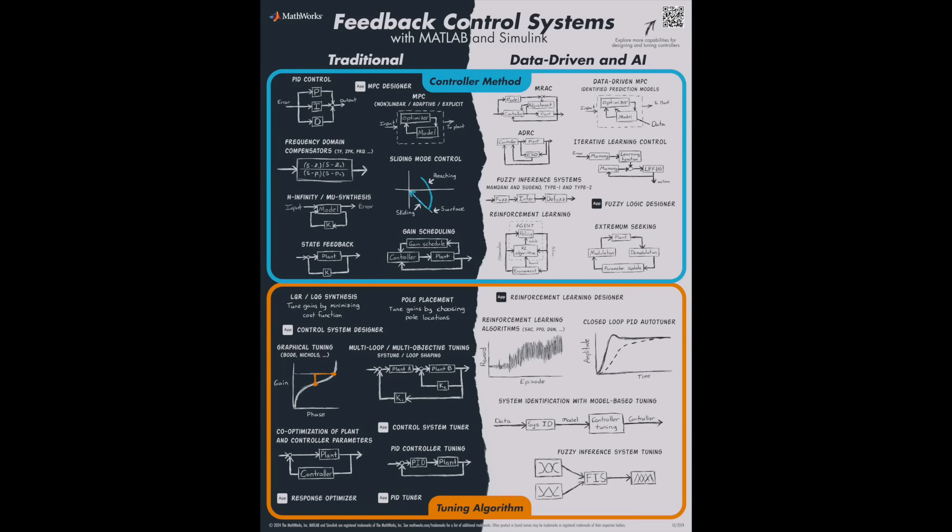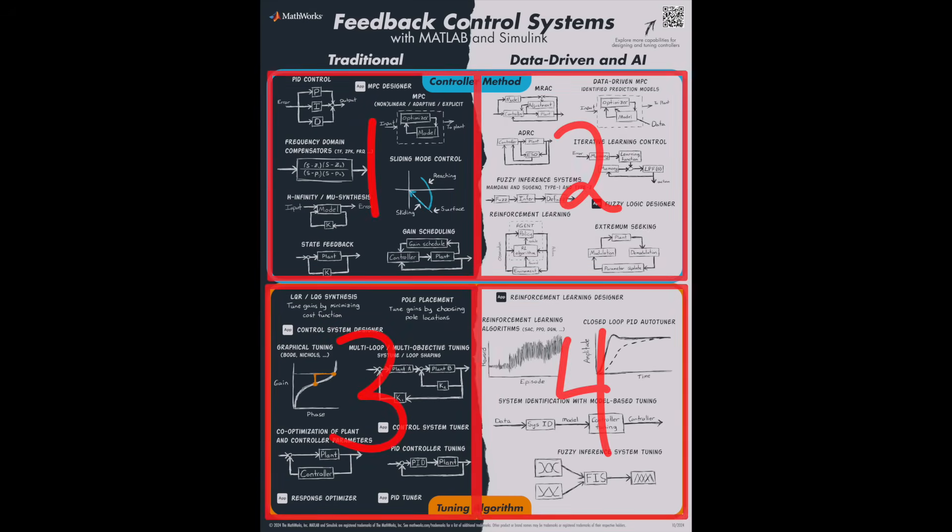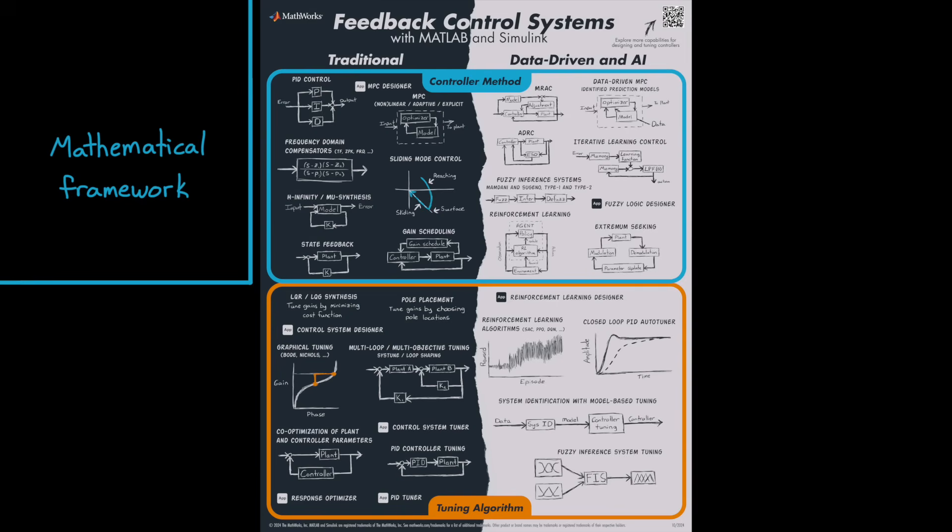In the feedback control systems map, we tried to find a way to classify the different control approaches. There are several ways that this could be done, but we divided them up into four different groups. Between the top and the bottom, we're differentiating between the controller method, or the mathematical framework of the controller, from the tuning algorithms, which is how we populate the parameters of the controller. For example, one controller method like PID control could have several different ways to tune it.